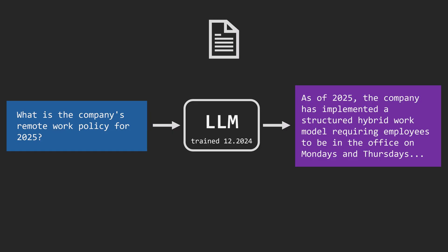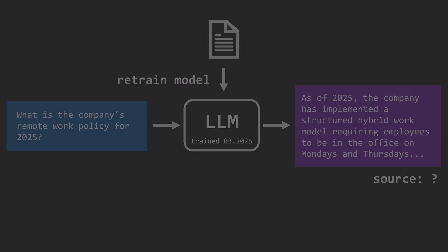We could retrain the model with updated data, but that's time-consuming, expensive, and still wouldn't guarantee it can reference specific sources accurately. Despite their capabilities, base language models have limitations — they hallucinate, struggle with citing sources, and require frequent retraining to stay current.